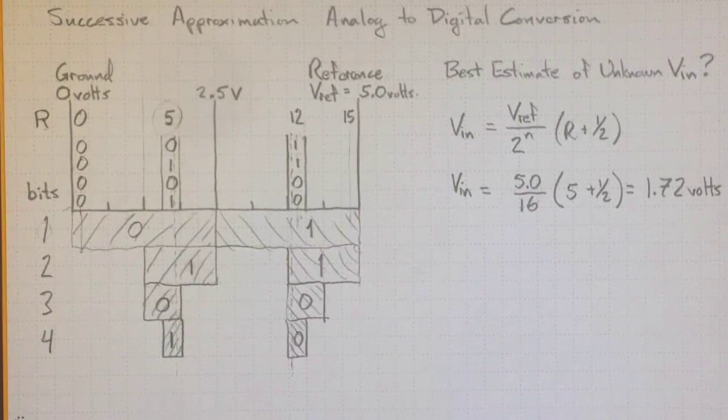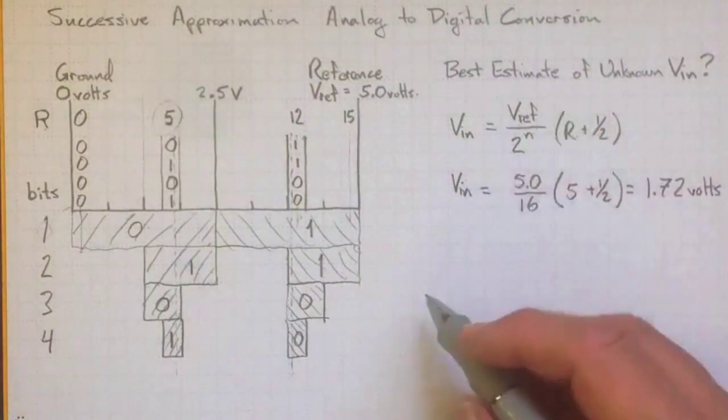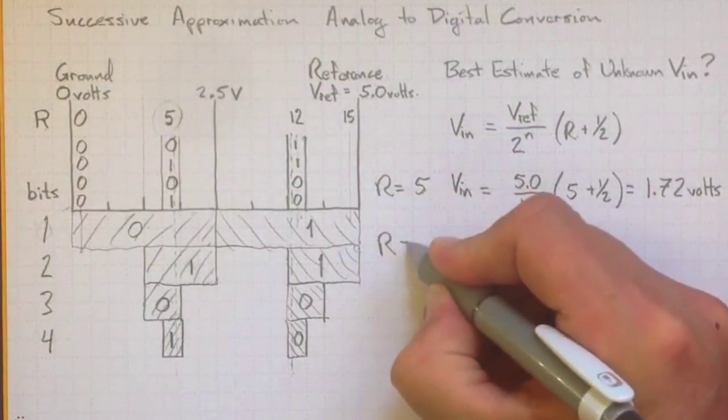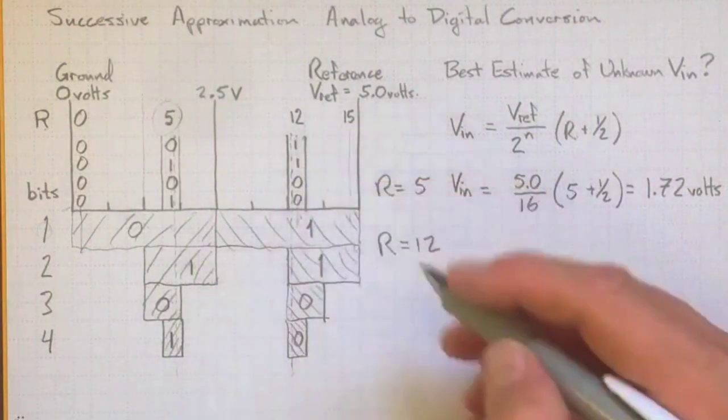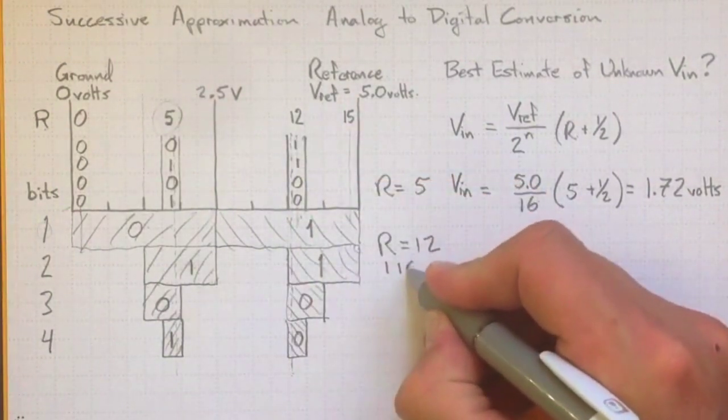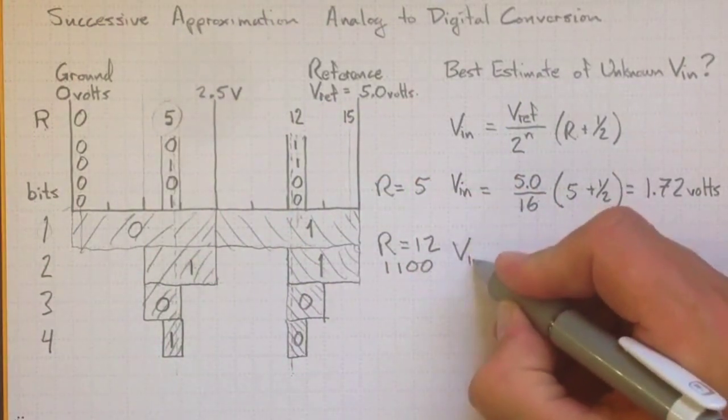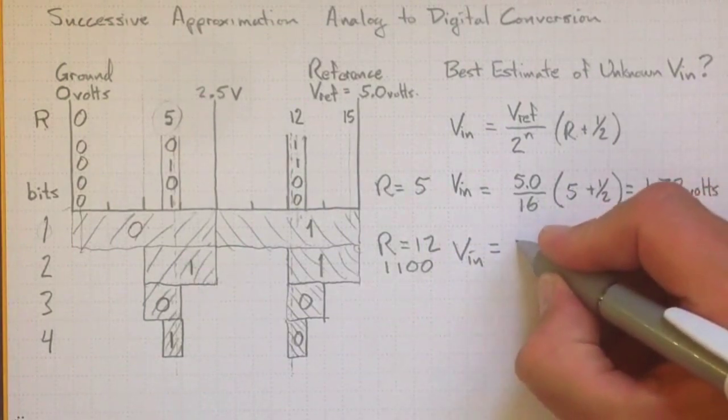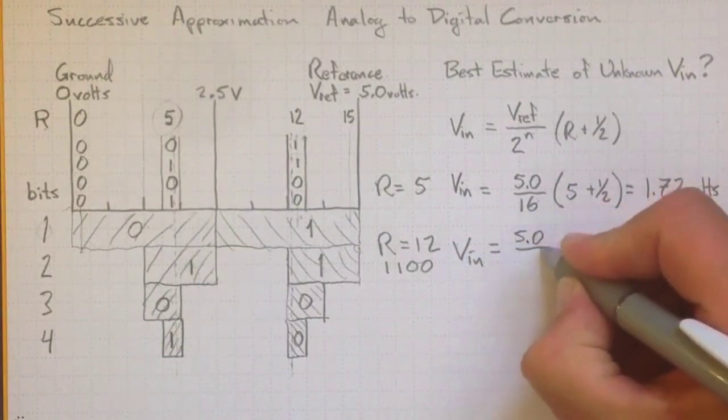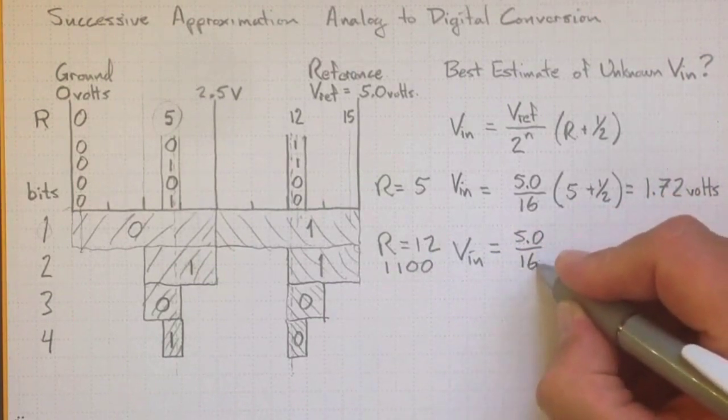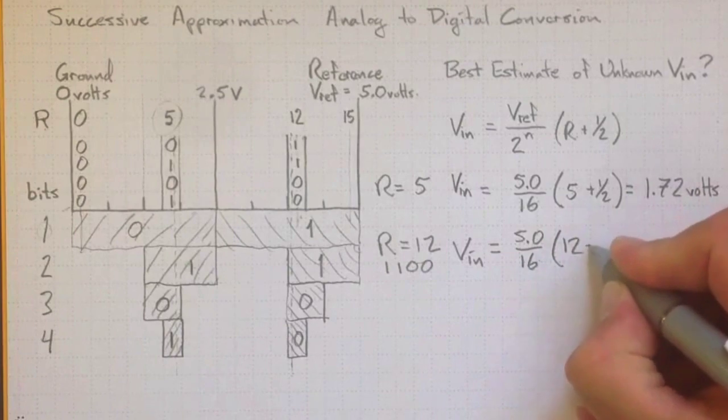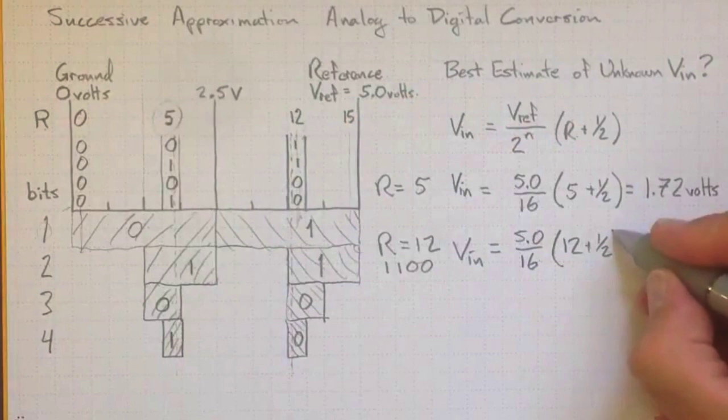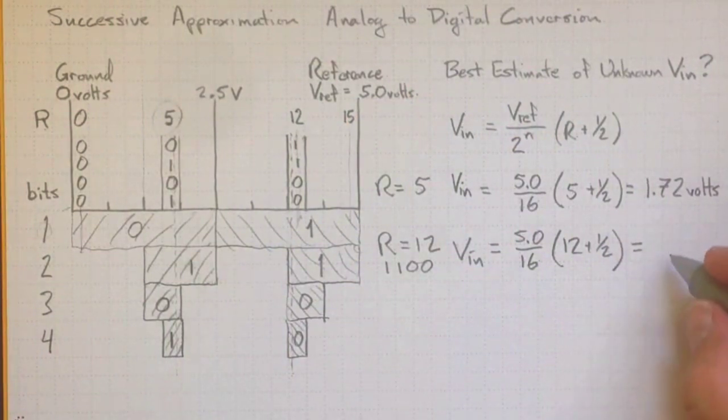Now let's consider if, instead of the case where we had R equal to 5, what if we had the other one where we had R equal to 12? That was our 1, 1, 0, 0. Then we'd get Vn equal to 5 over 16, same as before, that's our range and our resolution, times 12 plus a half. That puts us in the middle of this zone here, and that equals 3.91 volts.